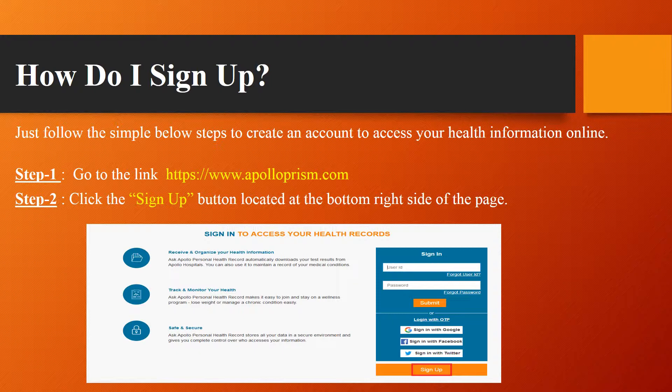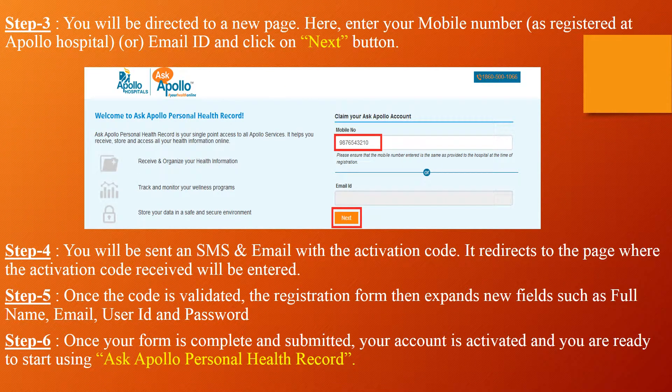Go to the link www.apolloprism.com. Click on the button named 'Sign Up' located at the bottom right side of the page. You will be directed to a new page. Here enter your mobile number or email ID, then click on the Next button.